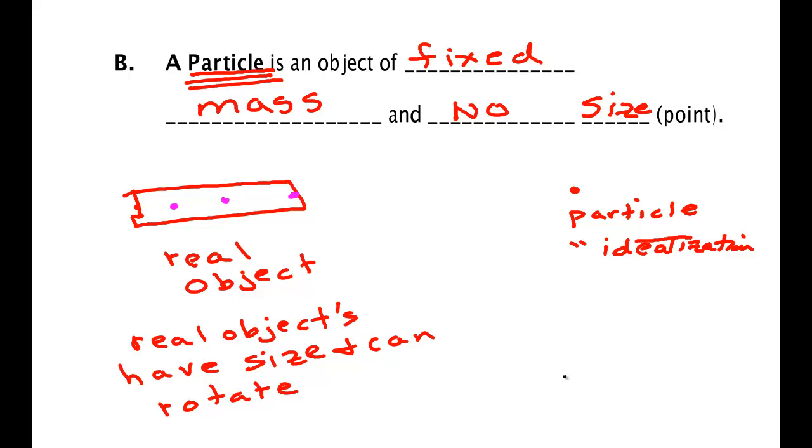Each one of those dots is at a different point. So for a real object you'd have to say what part of the object you meant. But a particle, because it has no size, there's no ambiguity as to where we mean when we say it's located at this point.